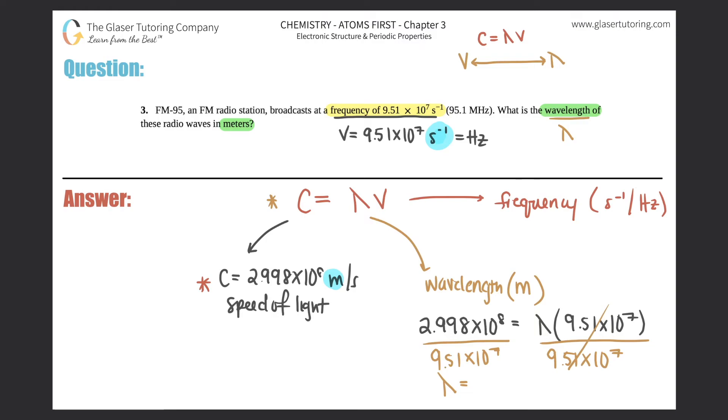We need three significant figures because the number they gave you had three sig figs. So it will be 3.15. That's 3.15 meters, because when you use this formula, the wavelength comes out in meters. And that's what they wanted. Box this answer off. That's the final answer.